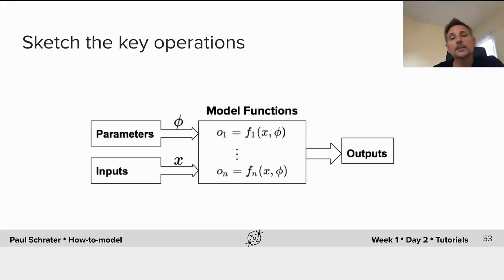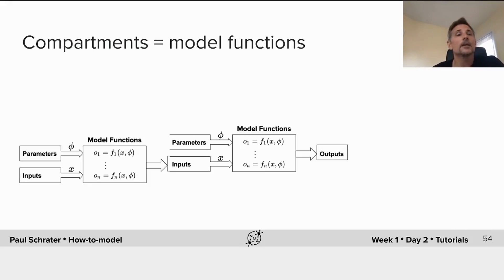When we sketch the key operations, we're filling in those components of the model functions that relate inputs to outputs. And when we put together the different mechanisms we might have, we're mostly chaining together model functions where the output of one function becomes the input to another.